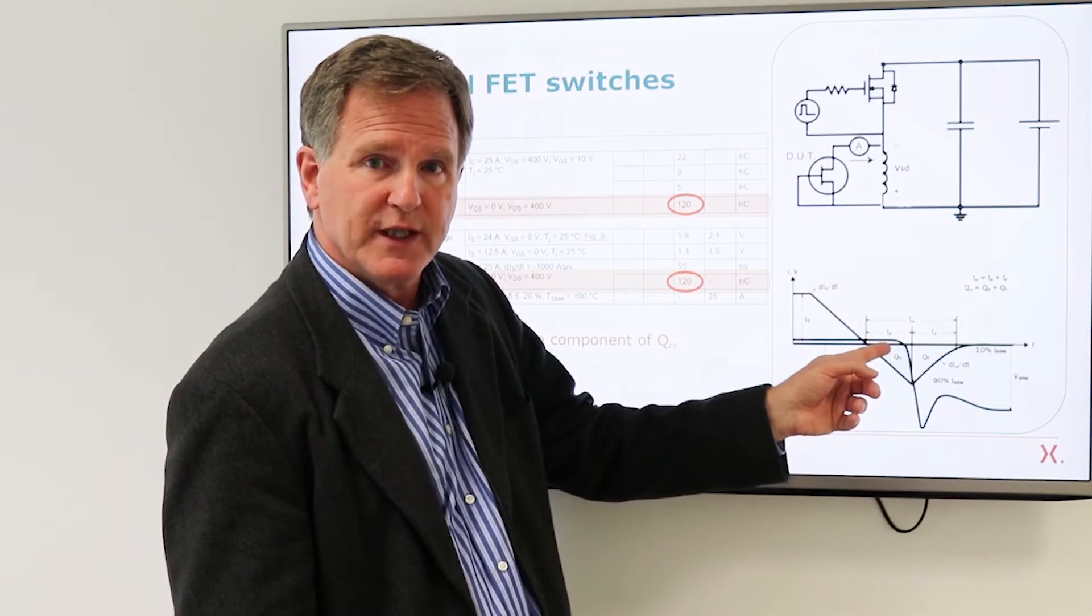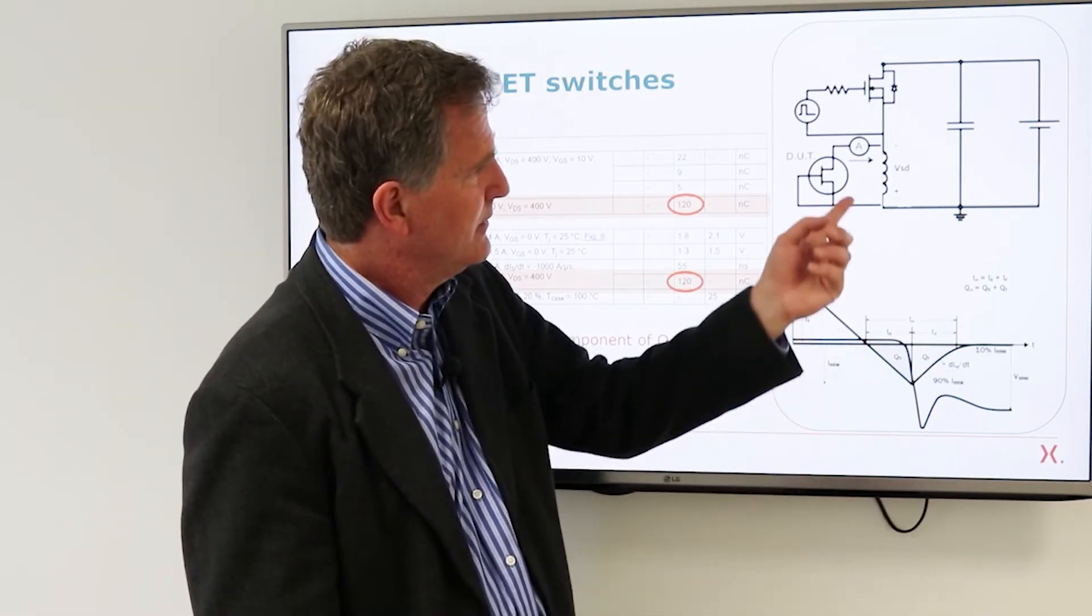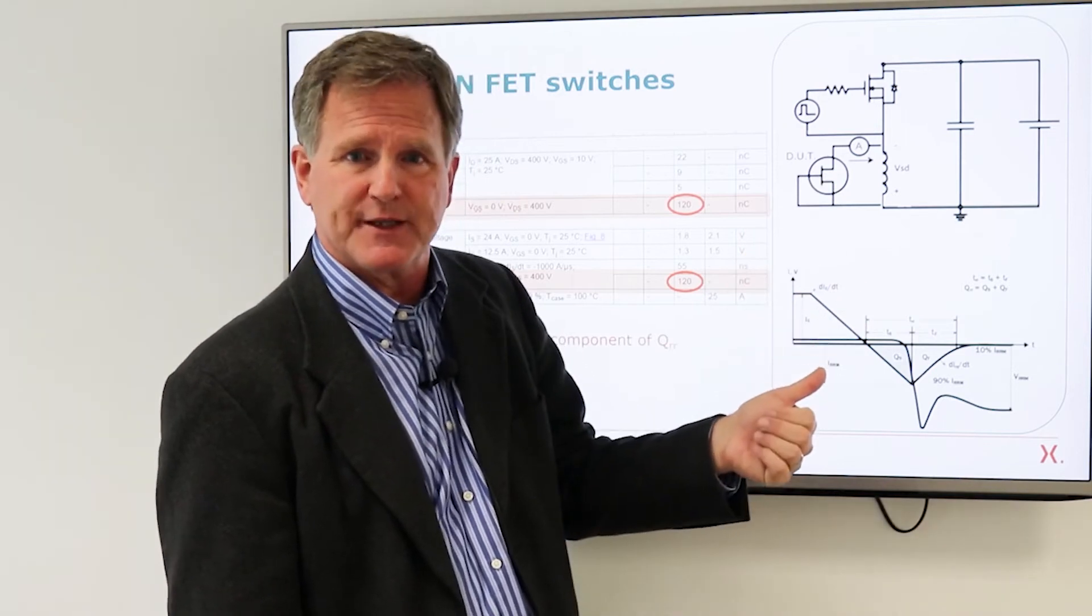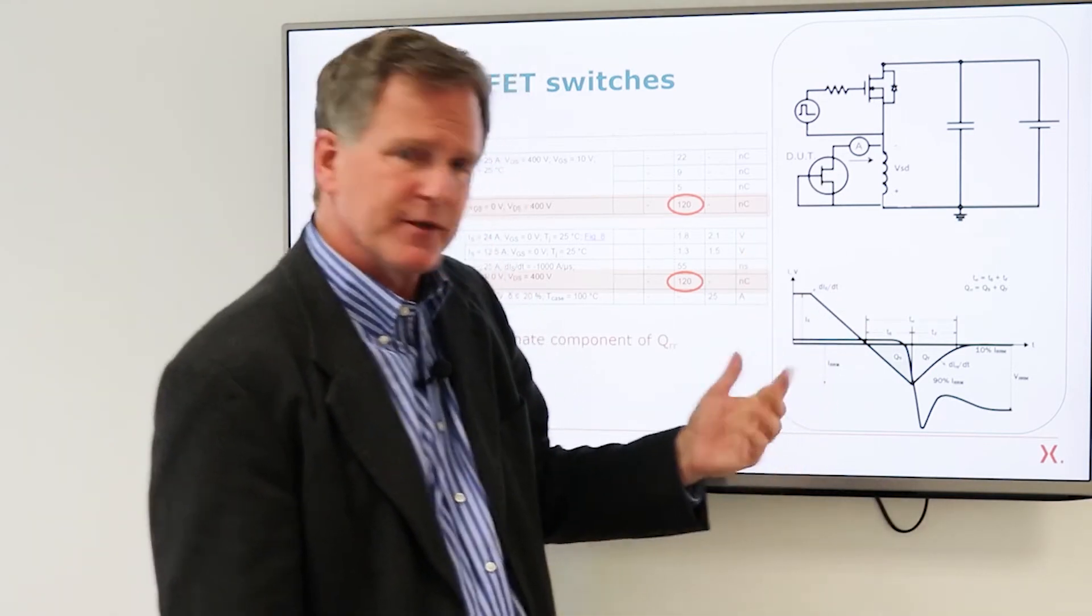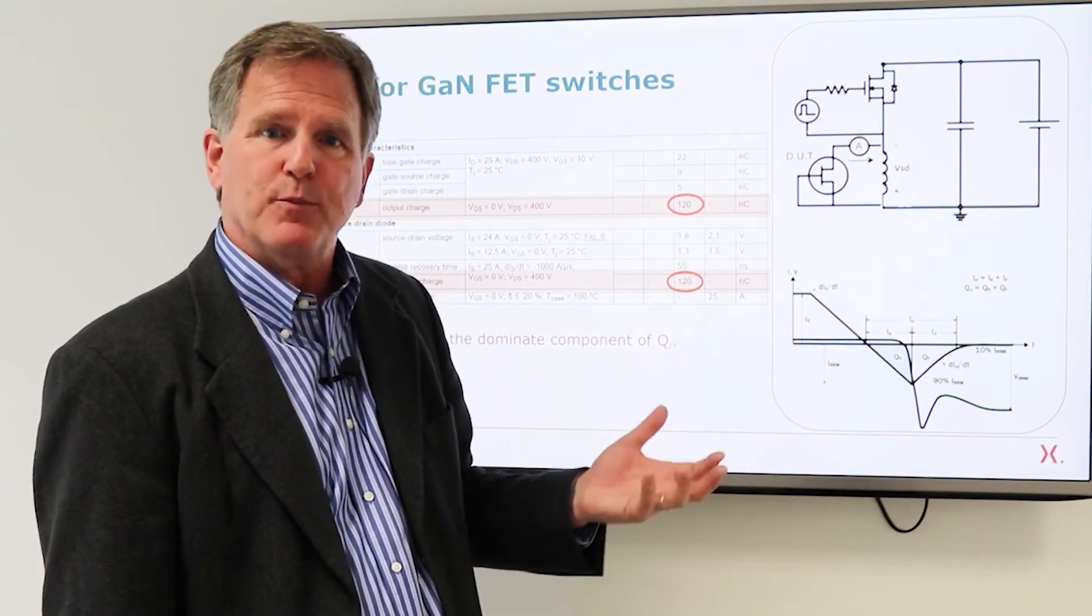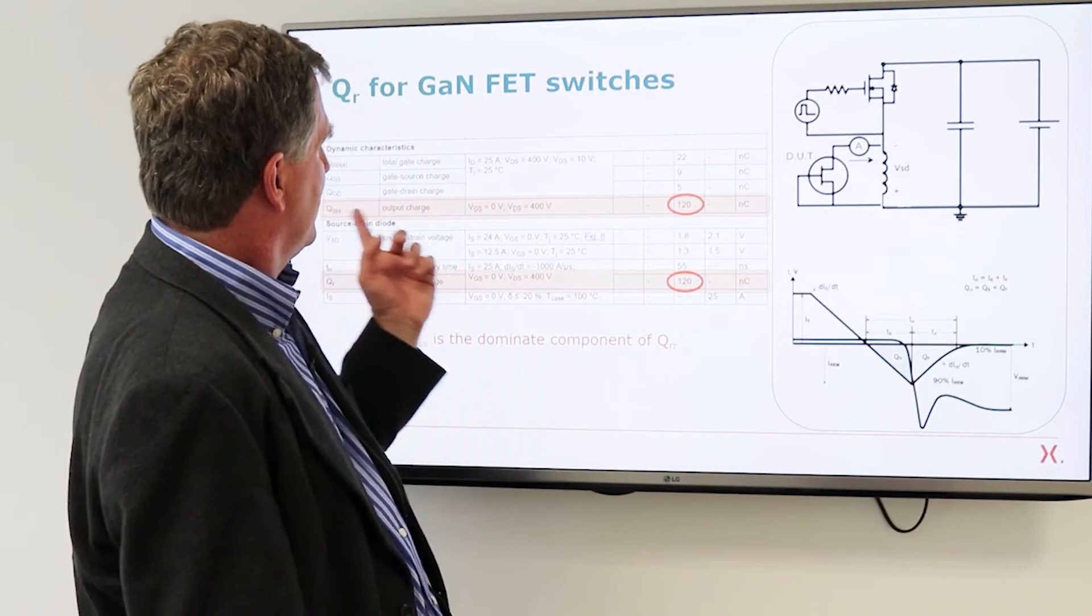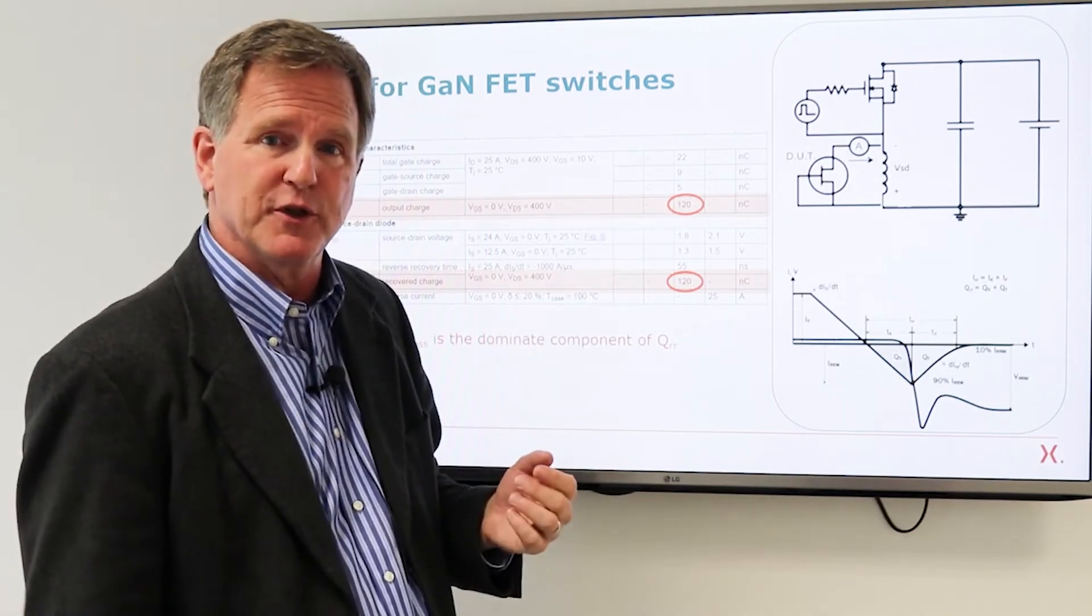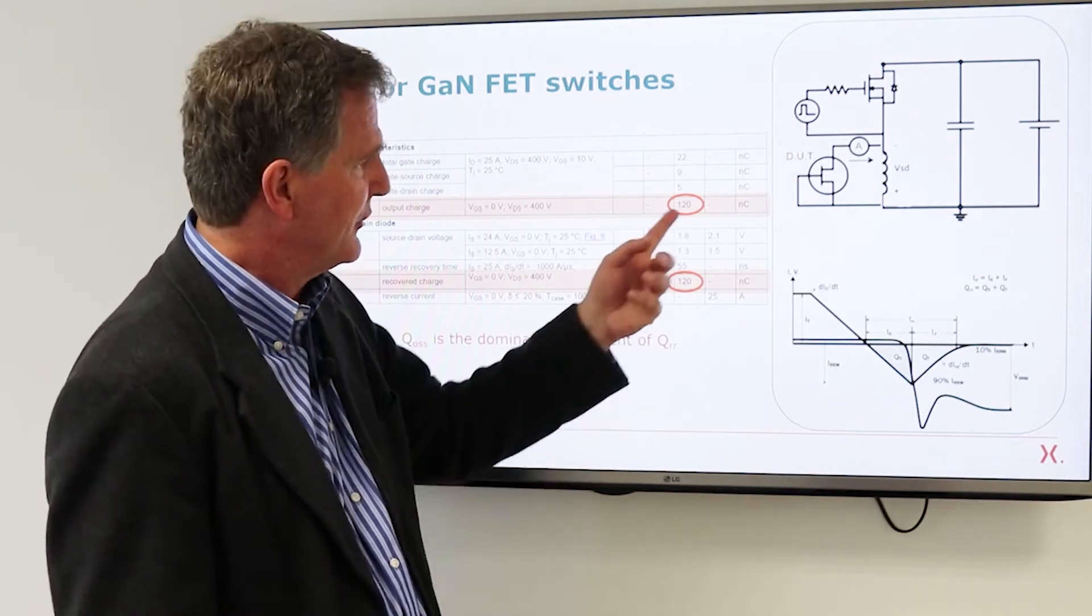Up until the point that we're blocking the full DC voltage. Okay so if you make an integral of this negative current you will get any minority carrier charge that was stored in this device plus any output capacitance charge and it turns out for our devices the recovered charge is almost entirely output charge. So you see QOSS of 120 nanocoulombs for this device we actually didn't measure an appreciable difference and so we've specified the same number for the recovered charge.